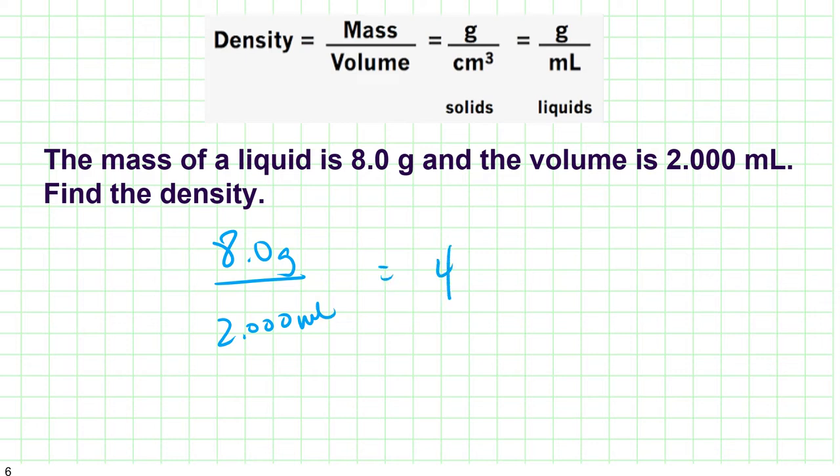So hopefully you did eight point zero grams divided by two point oh oh oh milliliters. That's still four. But here I have one, two sig figs. Here I have one, two, three, four sig figs.